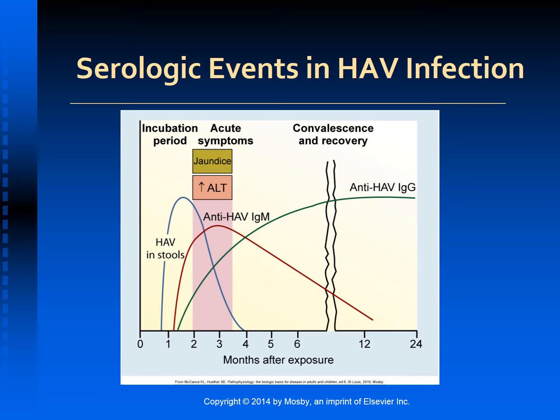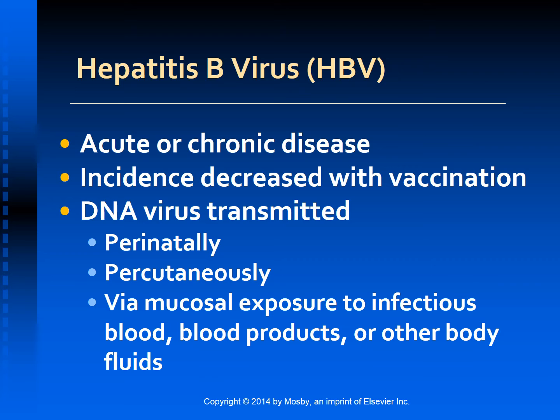Hepatitis B virus can cause either acute or chronic disease. Starting in the 1990s and continuing today, the incidence of HBV infection has decreased because of widespread use of the hepatitis B vaccination. About 12 million Americans have been infected with hepatitis B virus. In the majority of adults with acute hepatitis B, the infection completely resolves. Of the more than 1 million Americans who develop chronic infections, severity of liver impairment may range from none to severe liver disease. Approximately 15 to 25 percent of chronically infected persons die from chronic liver disease.